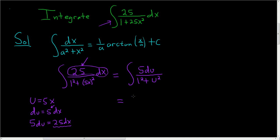This equals 5 times—and then it's 1/a, but a is 1, so it's 1/1—arctan(u/1) plus our arbitrary constant C. To finish,